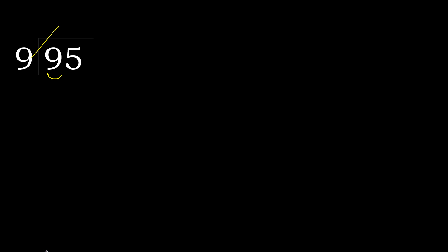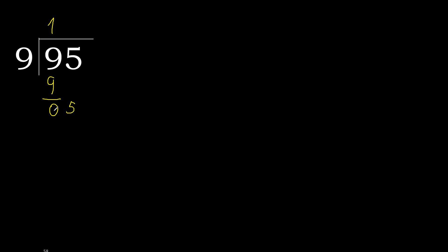9 multiplied by 2 is 18, which is greater. Multiplied by 1 is 9, which is not greater. Subtract to get 0. Next, bring down the 0 on this side.